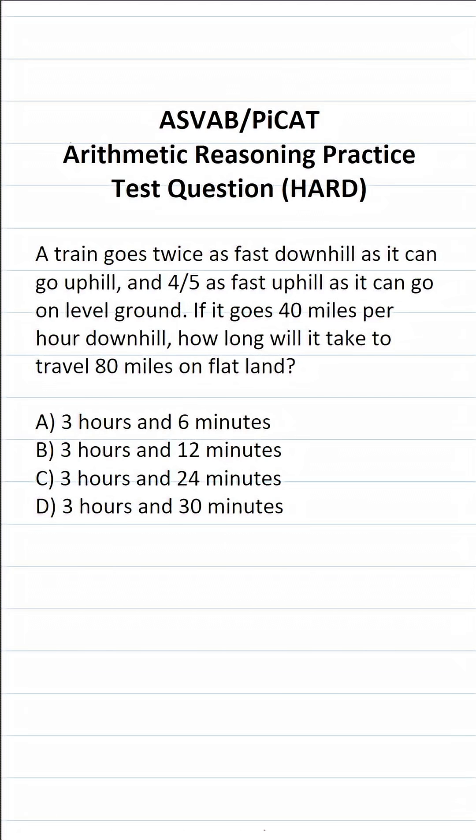This arithmetic reasoning practice test question for the ASVAB and PyCat says, a train goes twice as fast downhill as it can go uphill, and four-fifths as fast uphill as it can go on level ground. If it goes 40 miles per hour downhill, how long will it take to travel 80 miles on flat land?